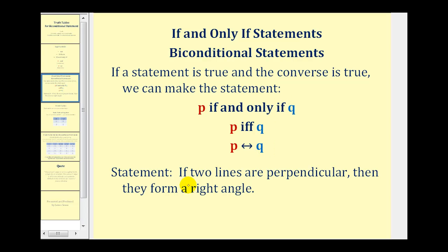An example of this would be if two lines are perpendicular, then they form a right angle, which is true. And if this is in the form if p then q, if q then p would be if two lines form a right angle, then the lines are perpendicular, which is also true.